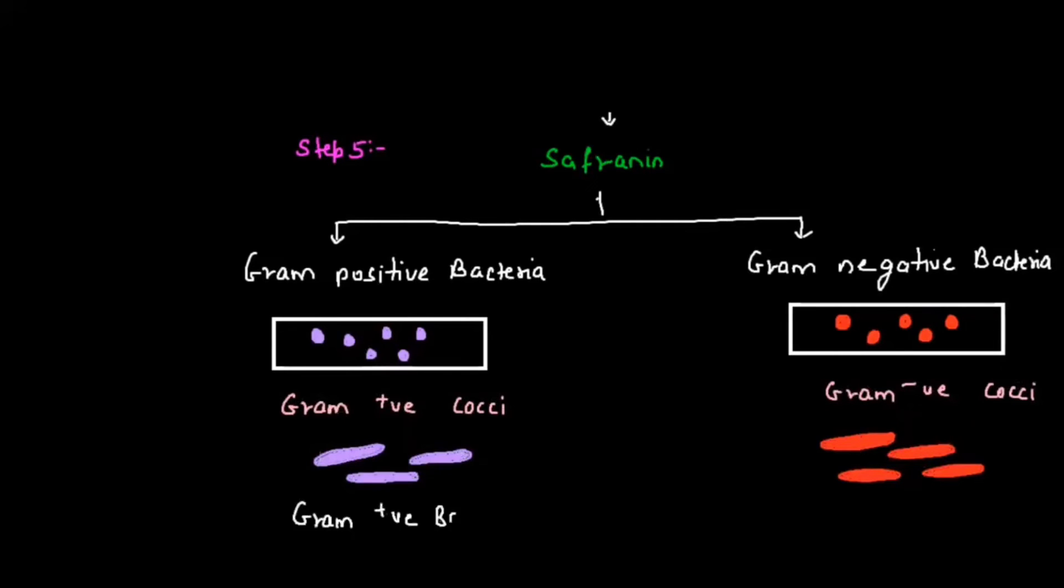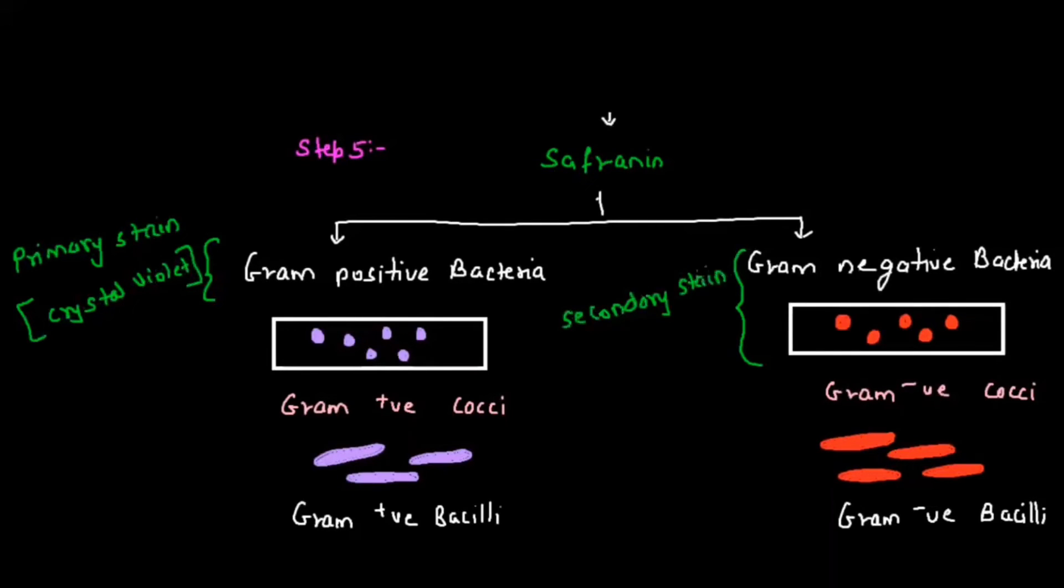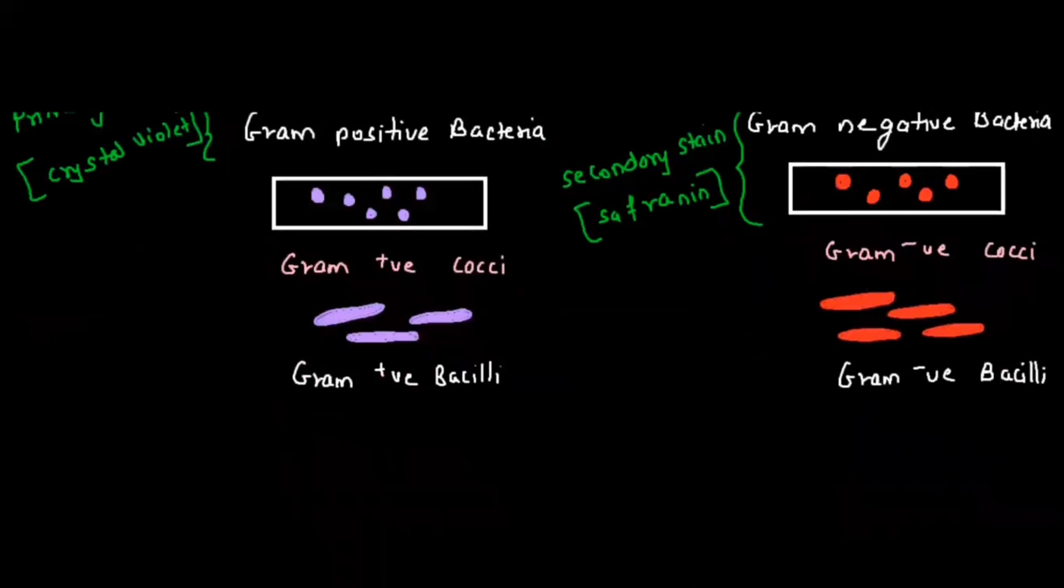To understand the staining technique, remember: the one which takes crystal violet, the primary stain, is Gram positive bacteria, and the one which takes safranin, the secondary stain, is Gram negative bacteria. Christian Gram gave this technique and that's why it is called Gram staining technique.